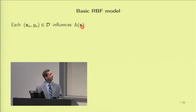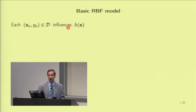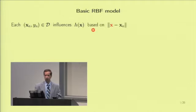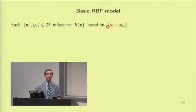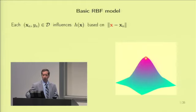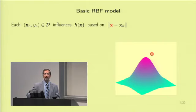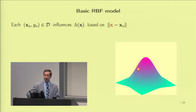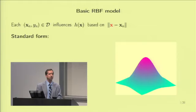The idea is that every point in your dataset will influence the value of the hypothesis at every point X. But here it's influenced in a particular way — through distance. A point in the dataset will affect nearby points more than faraway points. That is the key component that makes it a radial basis function. Imagine the center of a bump is the data point X_N. It's most influential nearby, and then the influence dies out. The symmetry around the center means it's a function only of the distance.